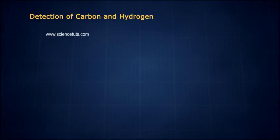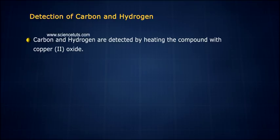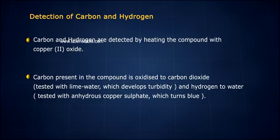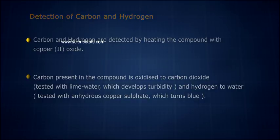Detection of Carbon and Hydrogen. Carbon and hydrogen are detected by heating the compound with copper oxide. Carbon present in the compound is oxidized to carbon dioxide, tested with lime water which develops turbidity, and hydrogen is oxidized to water, tested with anhydrous copper sulfate which turns blue.